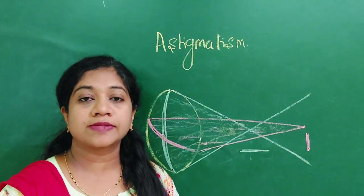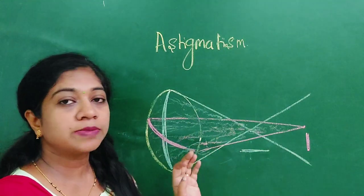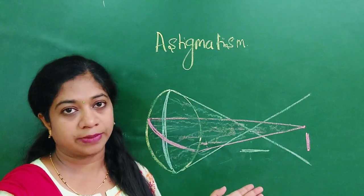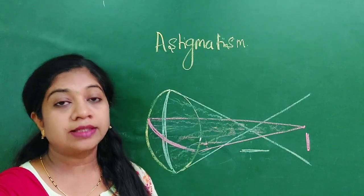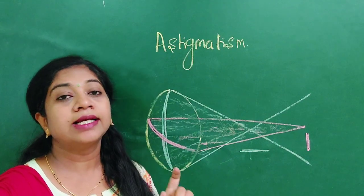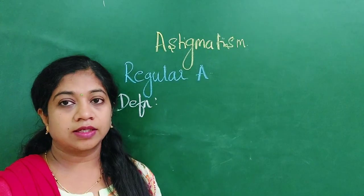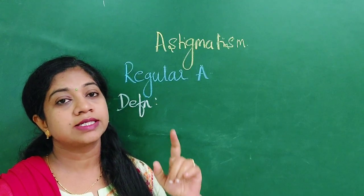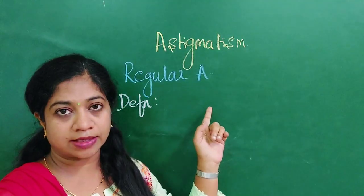Astigmatism is broadly classified into regular astigmatism and irregular astigmatism. Regular astigmatism is one where the refraction uniformly changes from one meridian to the other. In irregular astigmatism, it is very haphazard — there are multiple meridians with multiple refractions acting on the irregular surfaces. In regular astigmatism, we have two principal meridians and the refracting power changes uniformly from one refracting surface to the other.